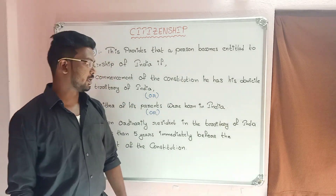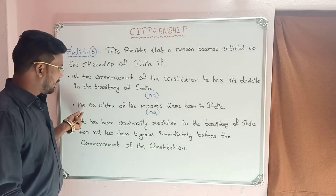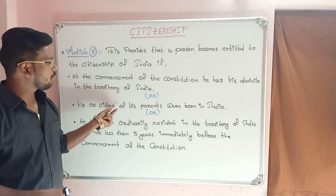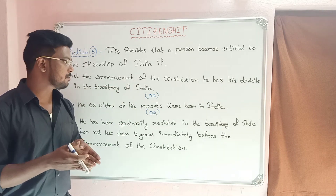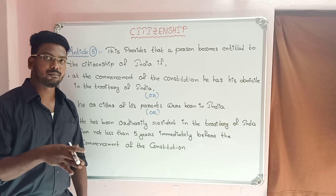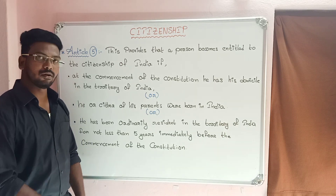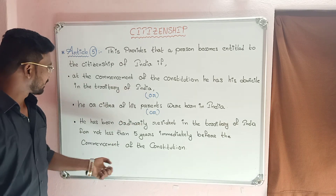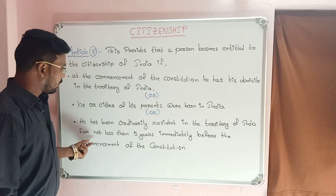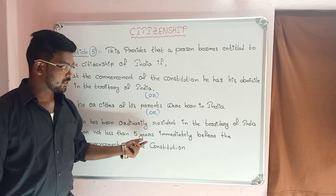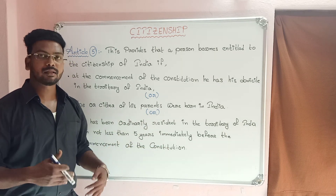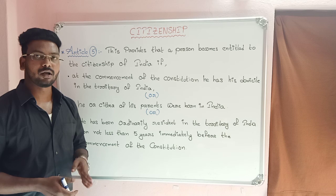The conditions under Article 5 are: he or she is residing in India; or either of his parents or father or mother was born in India; or he has been ordinarily resident in the territory of India for not less than five years immediately before the commencement of the Constitution.